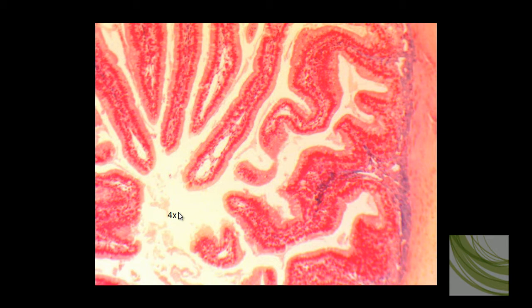This is a really good slide for looking at a characteristic of simple columnar that should help you identify it on a test. When you're looking at the nuclei, they form a pretty distinct band. They're all at about the same level within the cell. You can almost see this dark red line at 4X of nuclei.